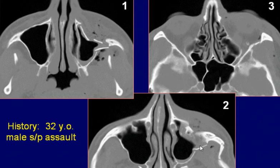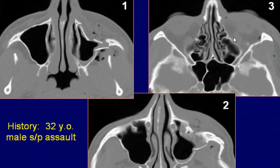Soft tissue density is present inside the antrum with suggestion of air-fluid levels. The axial images through the orbit in bone window settings show deformity of the lateral wall of the left orbit with breakage of the bony cortex.